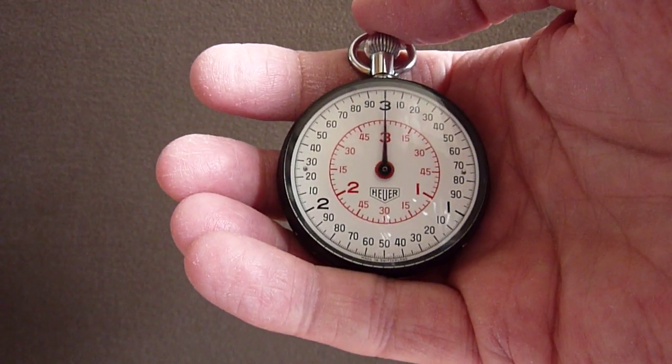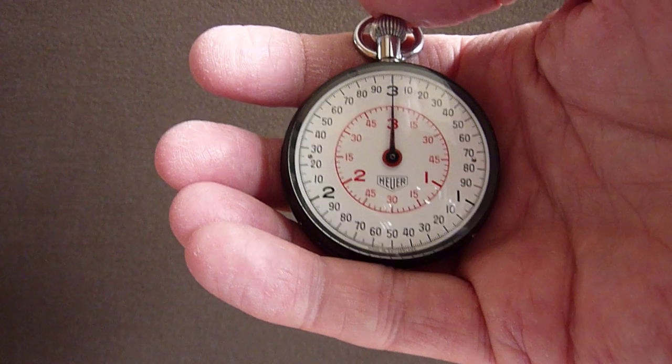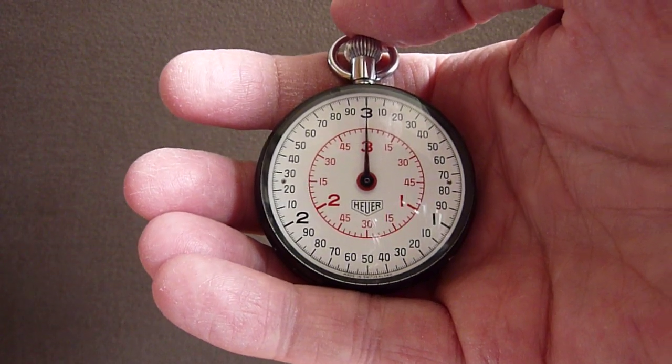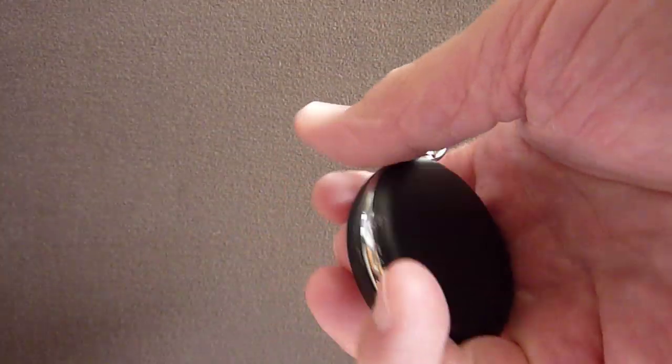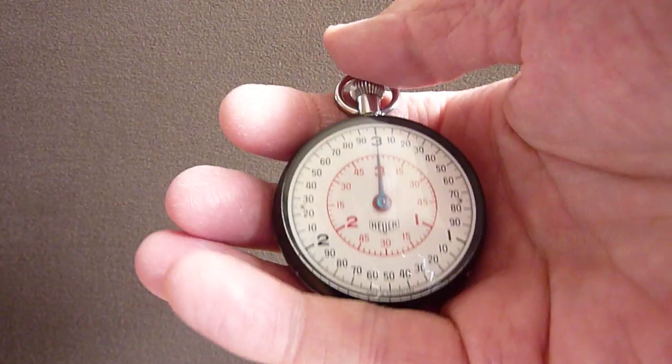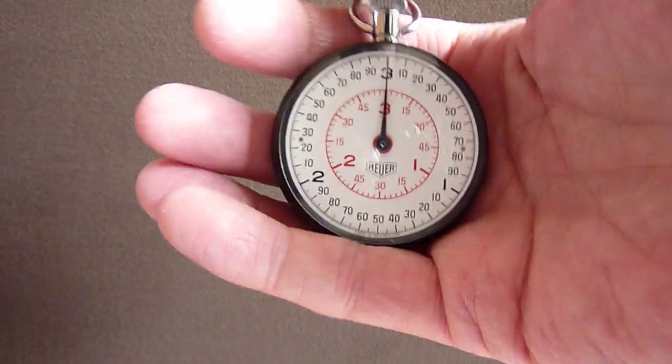This stopwatch was made in 1956 and was intended for the precision timing of laps in auto racing. The case of this Hoyer stopwatch is all stainless steel and the crystal is hardened mineral glass.